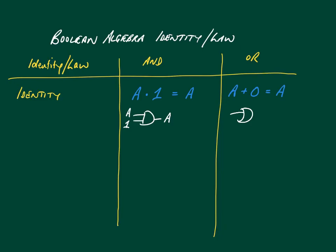For the OR column, we draw this logic gate. We have a and 0 as inputs into the OR gate. If it's 0 OR 0, the output is 0. If it's 1 OR 0, because it's an OR gate, the output is 1. So again, the output is whatever a is set to. And that's the identity law.